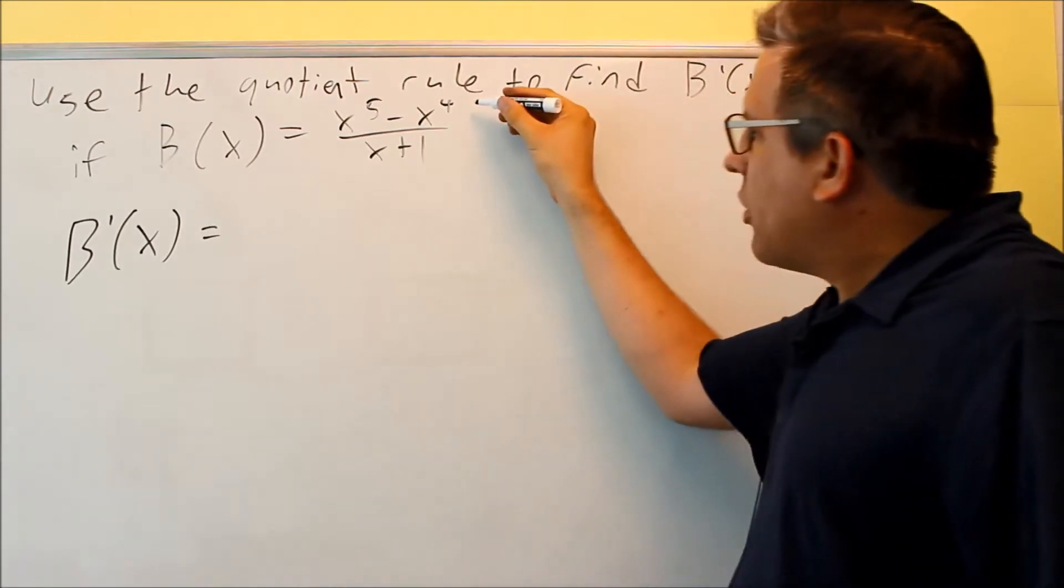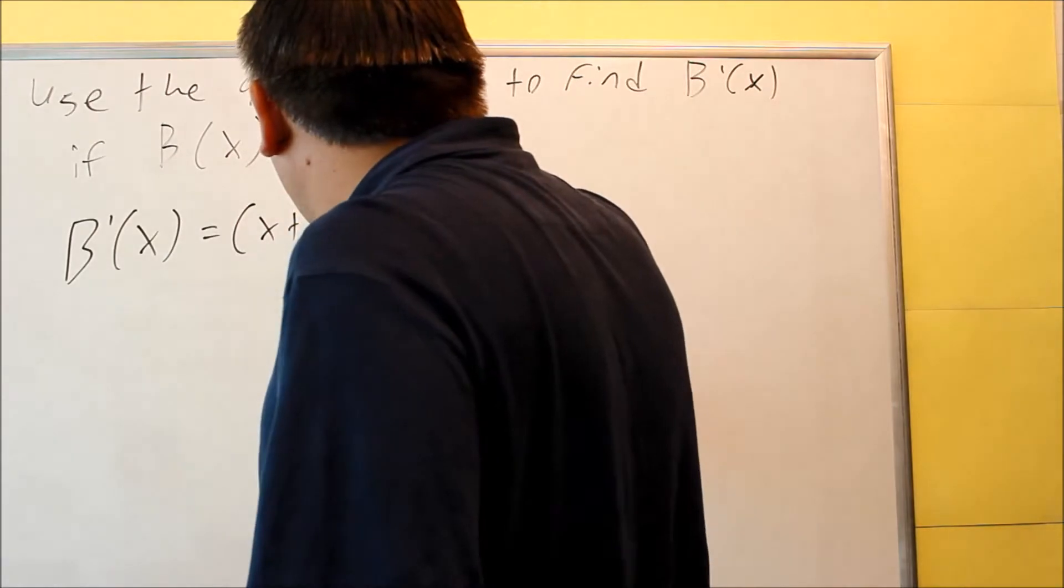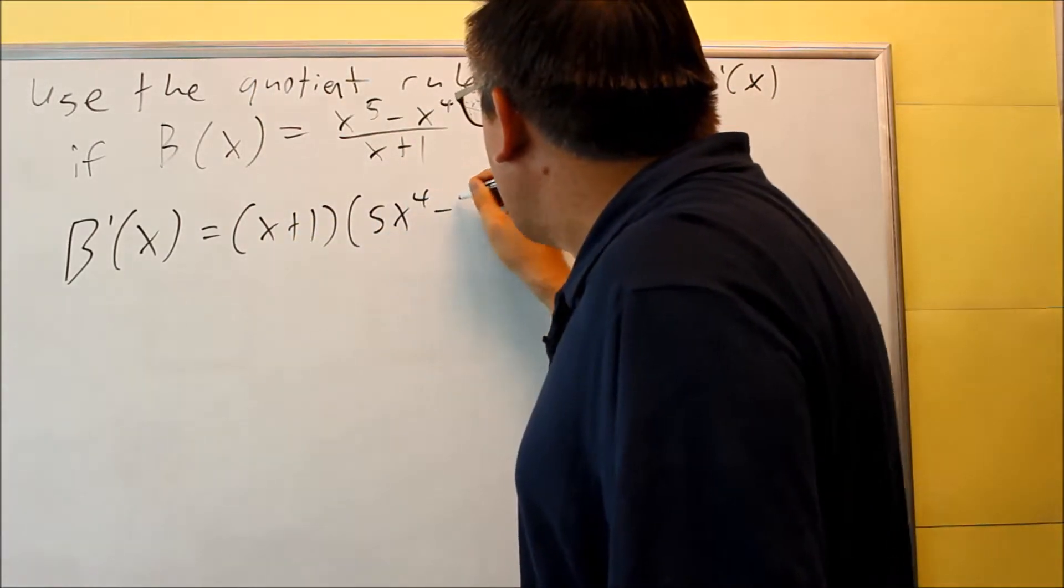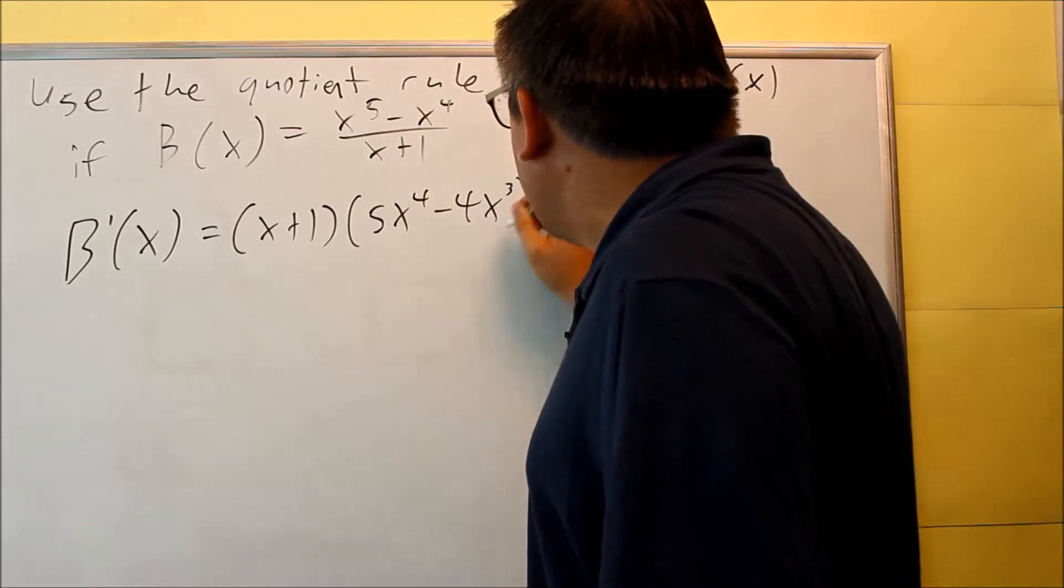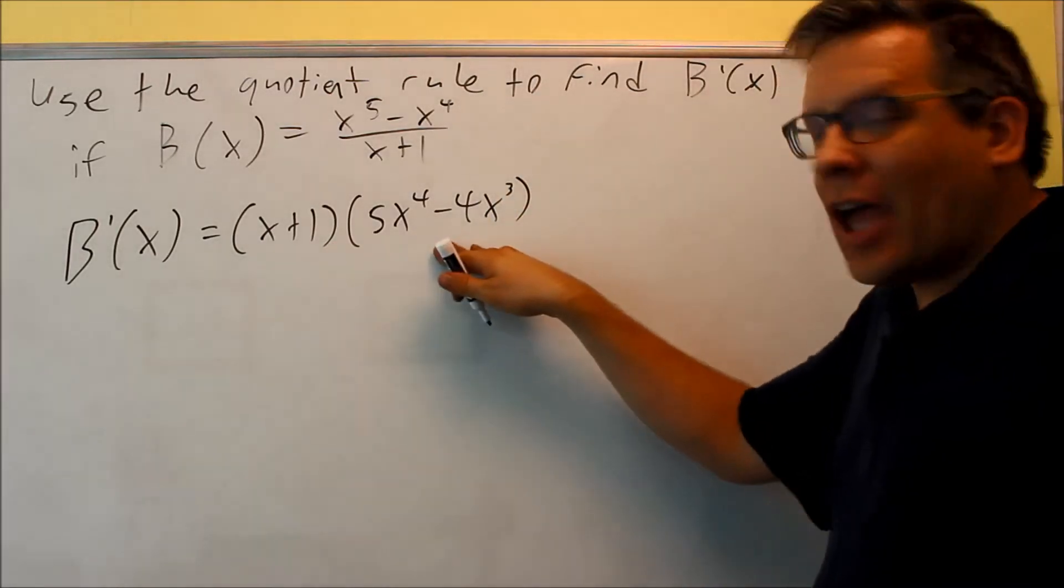Okay, so the top one is f, the bottom one is g. So, I have the bottom one times the derivative of the top, 5x to the fourth minus 4x cubed. We applied the power rule for that one. So, this is our g, f primed.